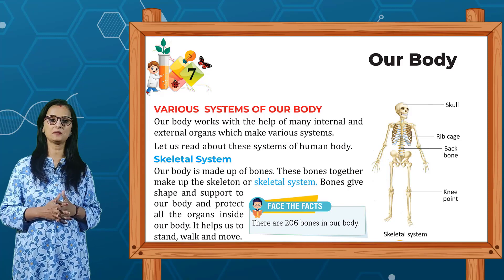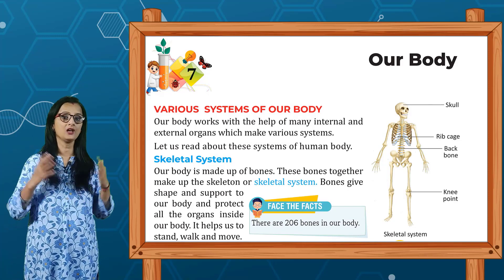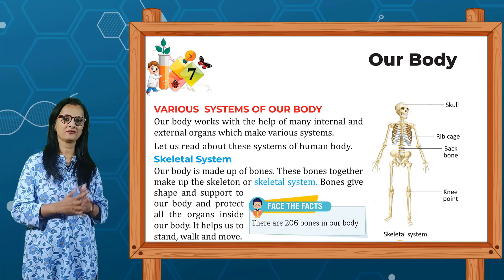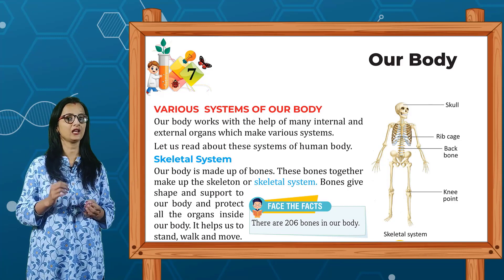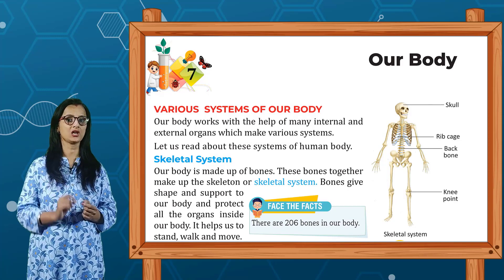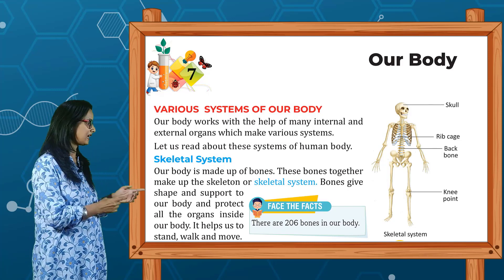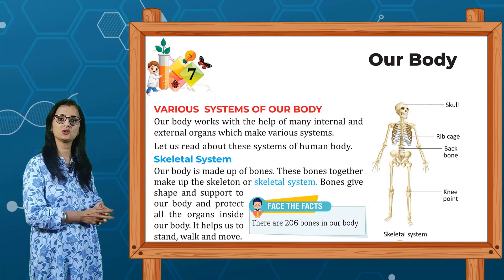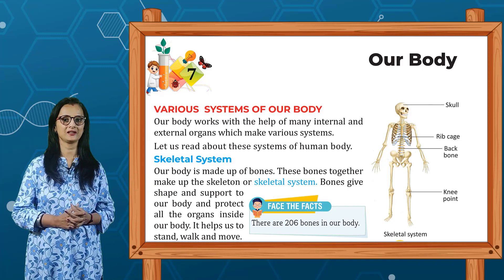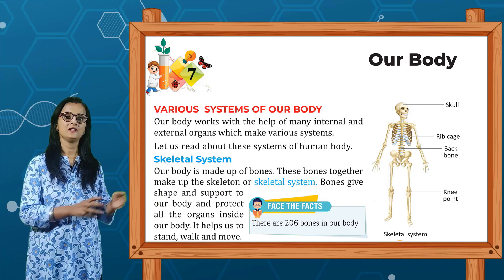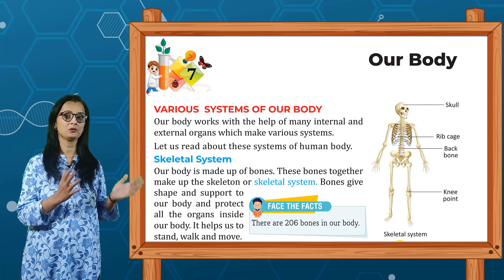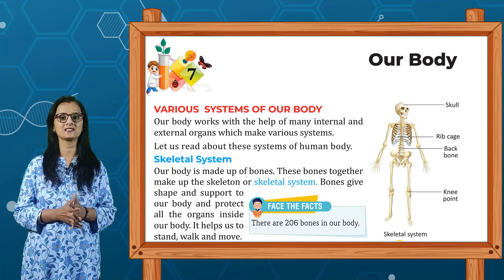Face the fact: there are 206 bones in our body. As you can see in this picture, the skeletal system shows different joints — rib cage, backbone, knee joint and skull — all together making the skeletal system.